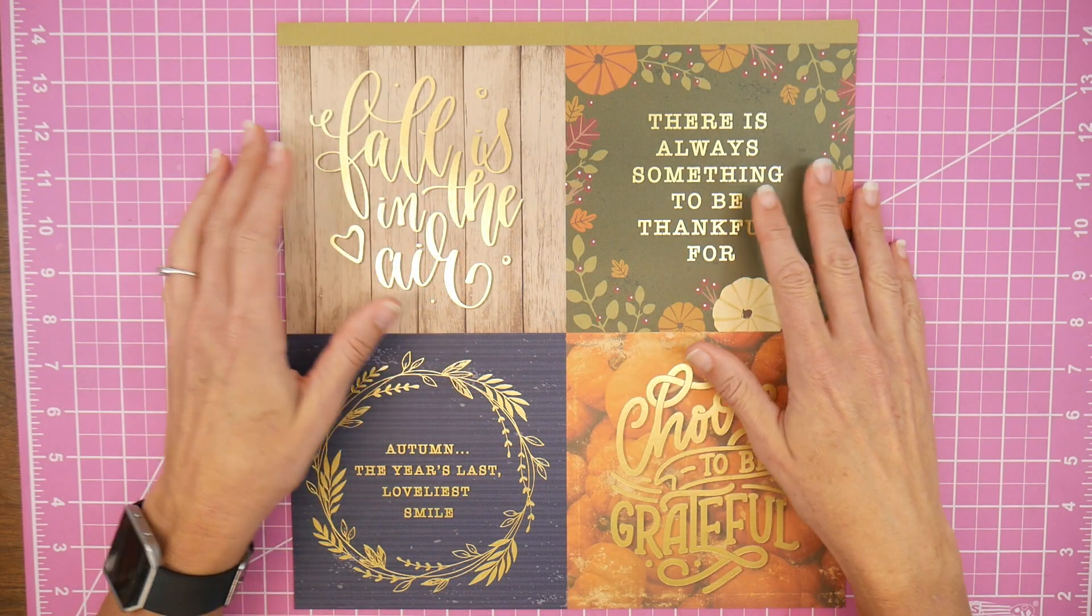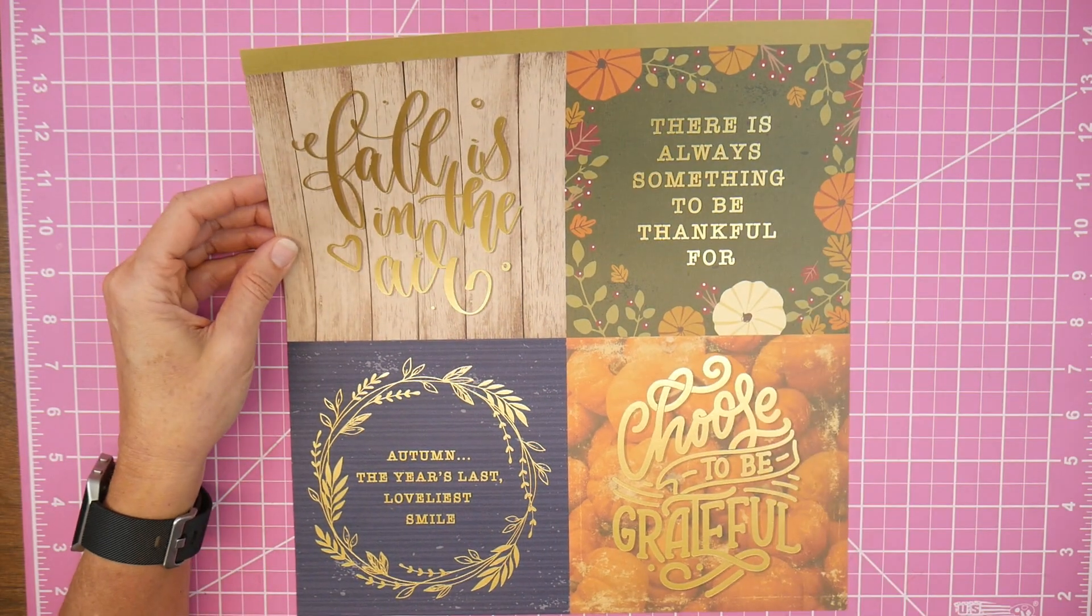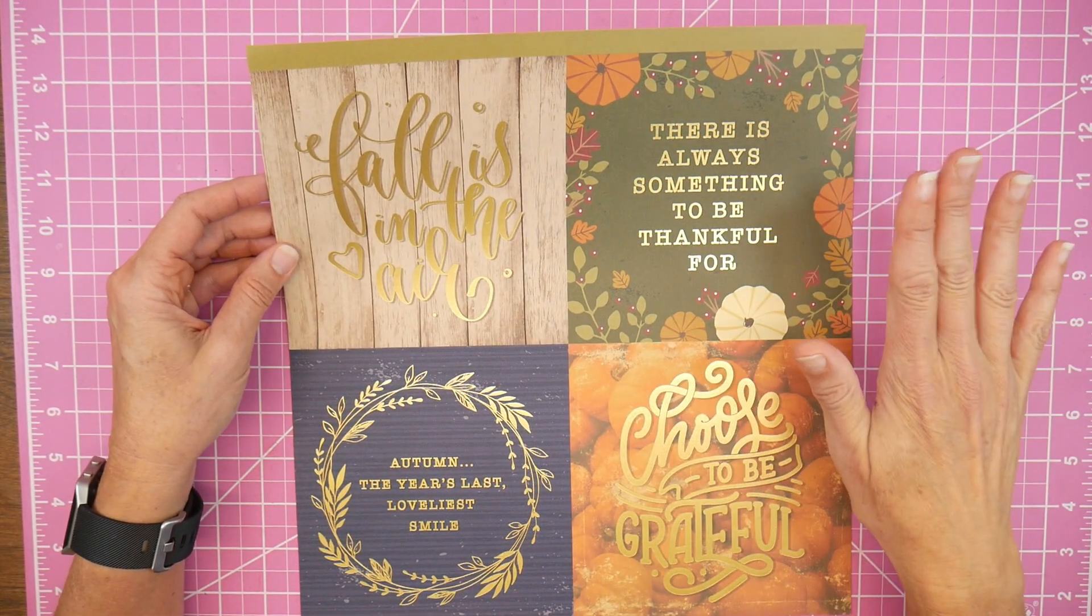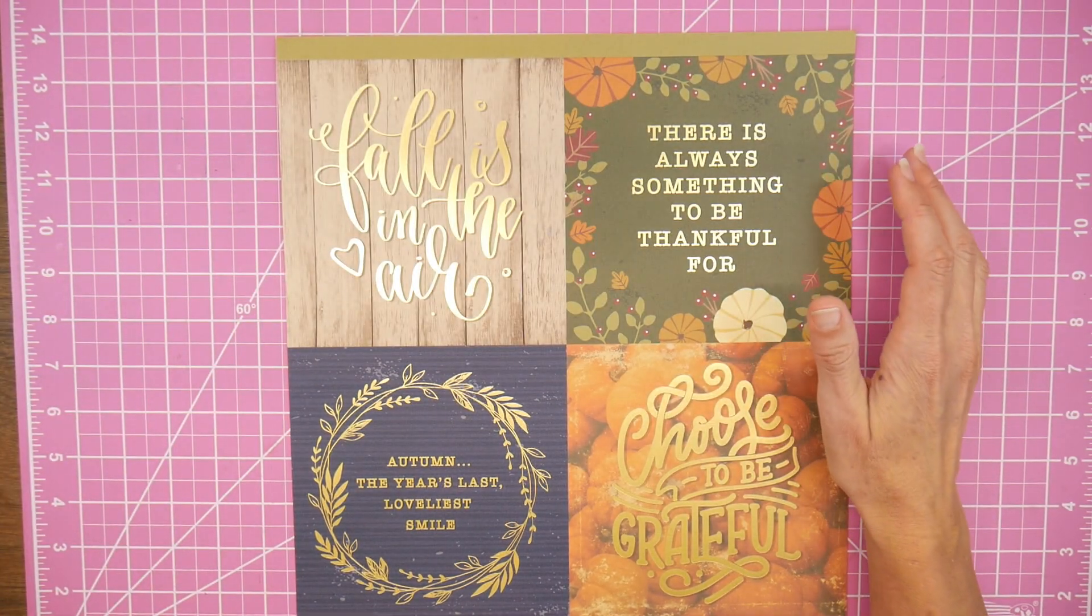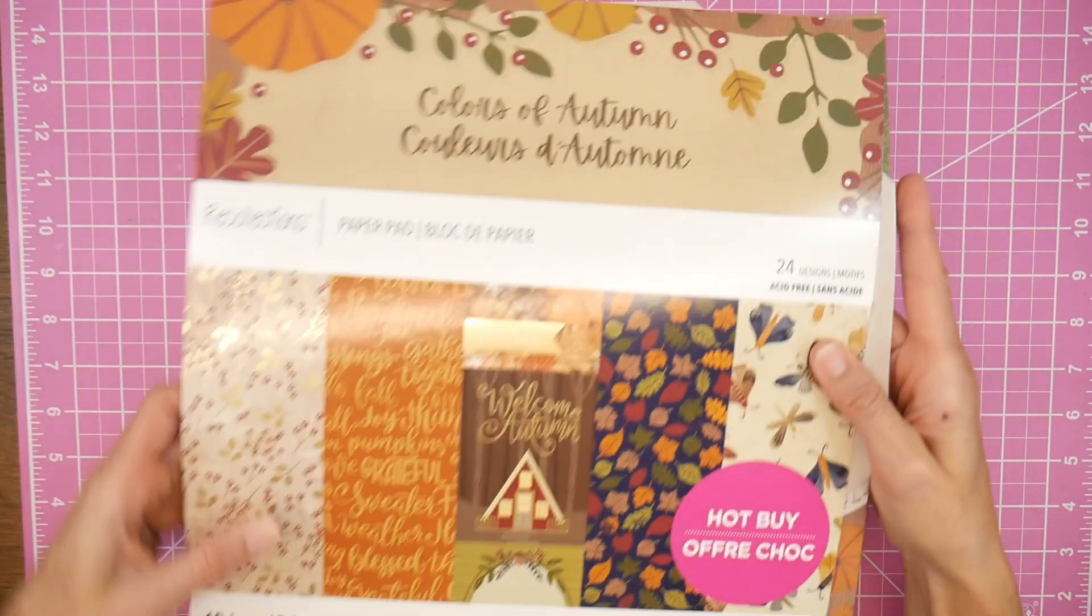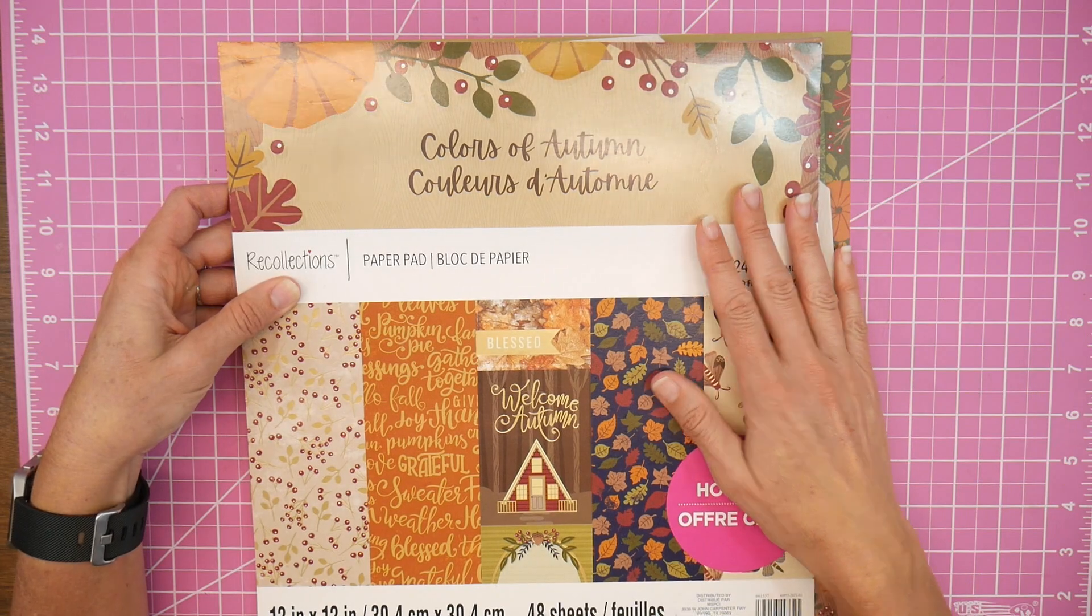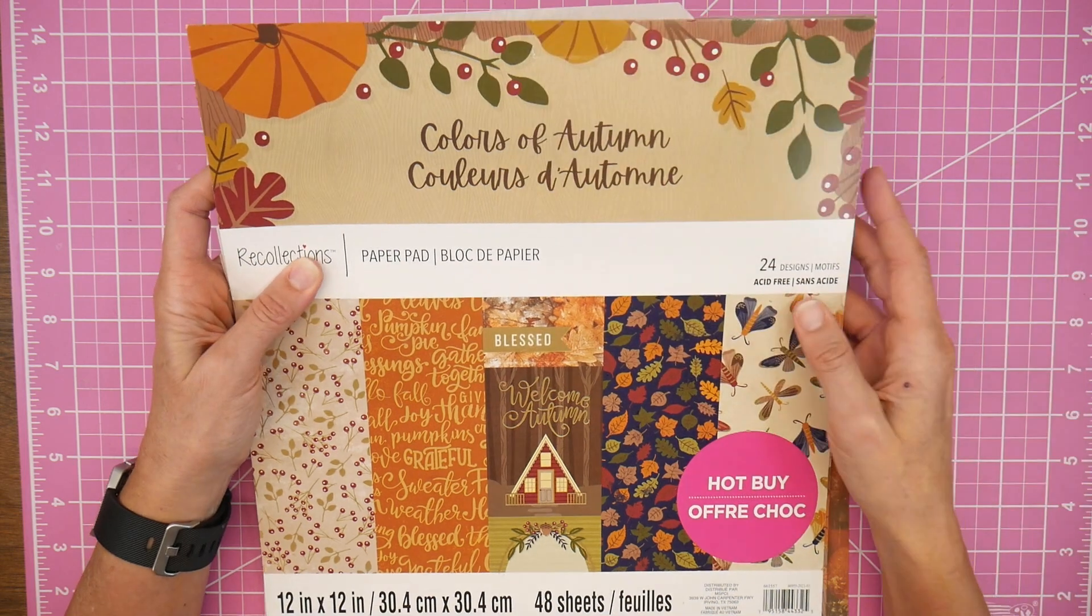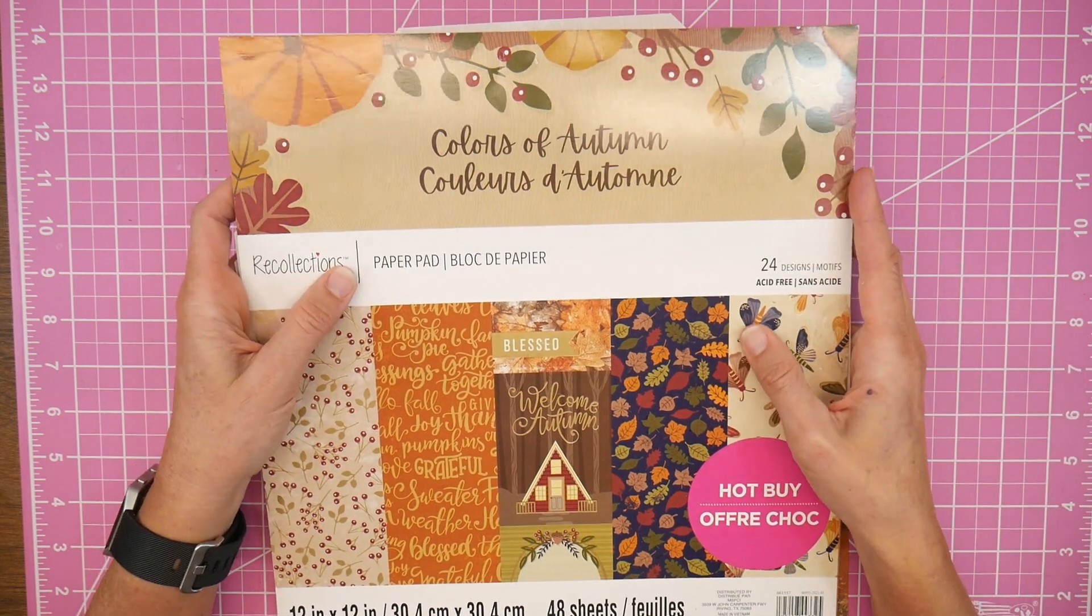Hey guys, it's Beth. Welcome. So today I am working on this 6x6 cut-apart page that is in my Colors of Autumn pad. I am getting back to this pad again. I feel like I've had to take some longer breaks working on this pad, but I'm back.